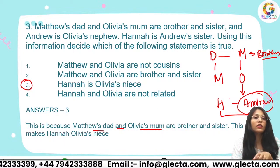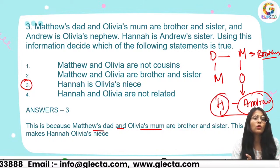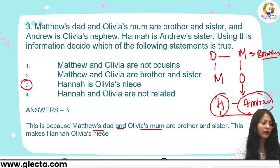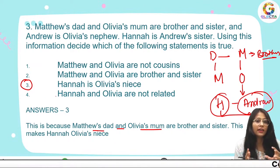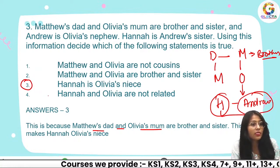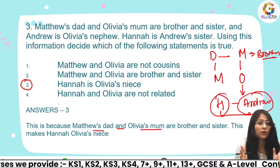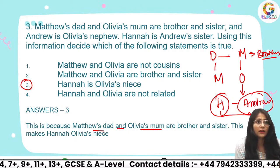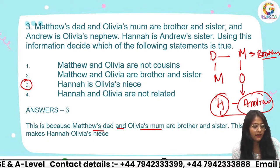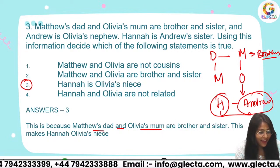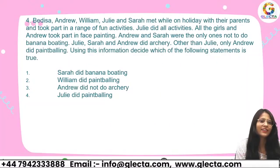Since Andrew is Olivia's nephew, Hannah would also be Olivia's niece. The right answer is three, because Andrew and Hannah are brother and sister, so if Andrew is Olivia's nephew, Hannah would be Olivia's niece. Very complicated — the correct answer is three.